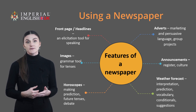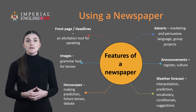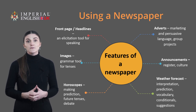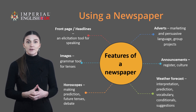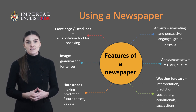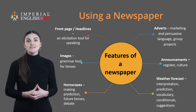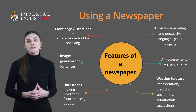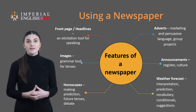The front page and headlines throughout can be used as an elicitation tool for speaking. All images can be used as a grammar elicitation tool — for example, asking questions like 'What is happening in the image?' Horoscopes, a typical feature of British and American newspapers, can be used for practicing future tenses, prediction and wider debate. Advertisements can be used for vocabulary, persuasive language, and can prompt student group projects like making their own companies and adverts. Announcements — particularly in local papers for weddings, funerals, graduations — and weather forecasts can be used for interpretation, prediction, conditionals and future tenses. There are also features like TV guides and celebrity news. How could these be used? Pause for a moment to think about this and talk to a colleague if possible.